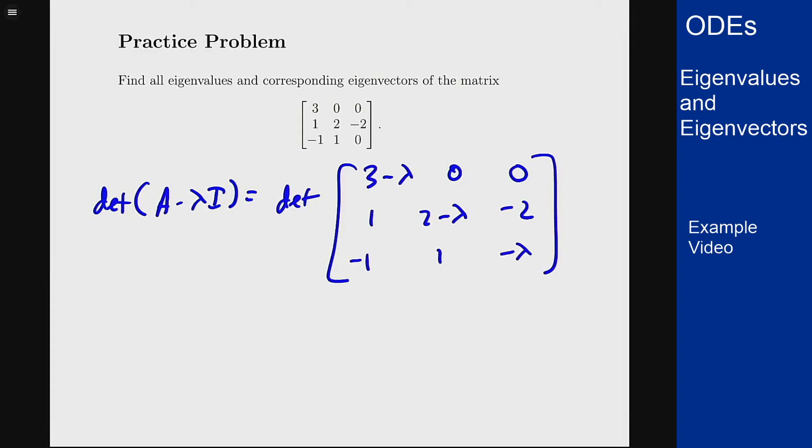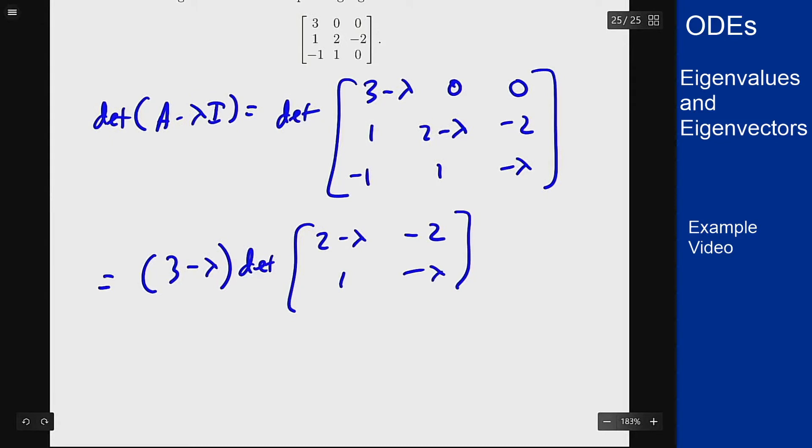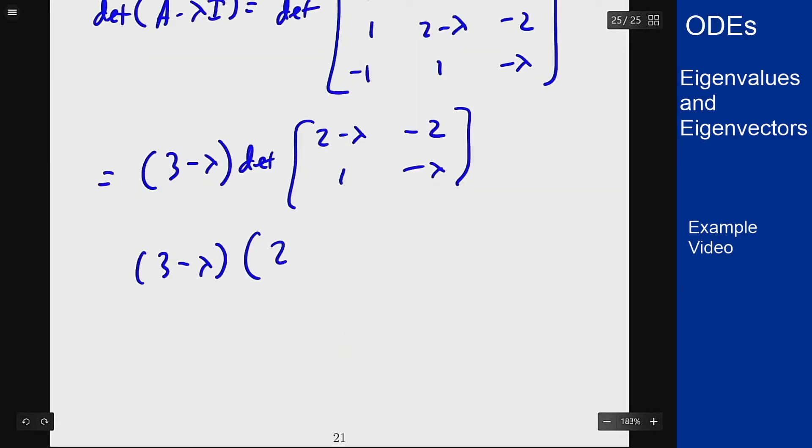The matrix is: 3 minus lambda, 0, 0; 1, 2 minus lambda, -2; -1, 1, negative lambda. We can expand along row 1 here to get this equals 3 minus lambda times the determinant of the bottom right minor, which comes out to 2 minus lambda times minus lambda plus 2.